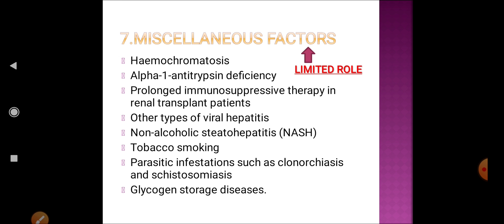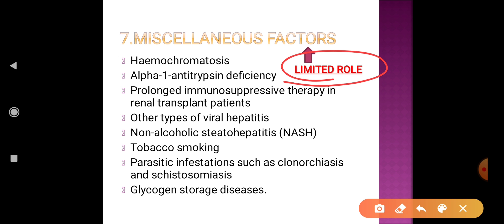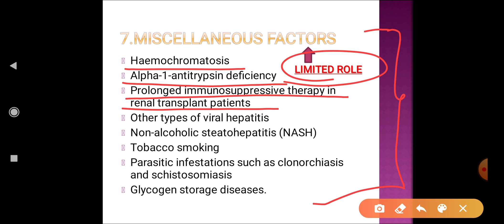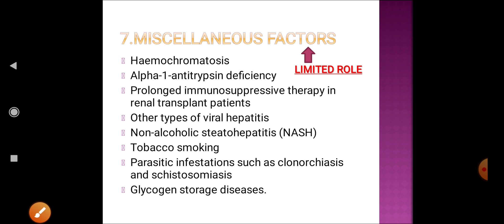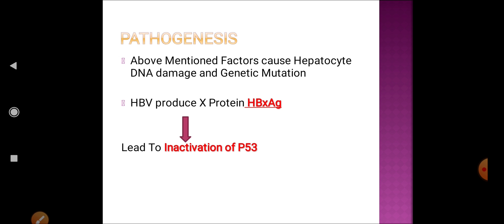These six are the main proven factors for hepatocellular carcinoma. The seventh category includes miscellaneous factors with a limited role in HCC development: hemochromatosis, alpha-1 antitrypsin deficiency, prolonged immunosuppressive therapy after renal transplantation, other viral hepatitis such as hepatitis D, non-alcoholic steatohepatitis, tobacco smoking, parasites like Clonorchis sinensis and Schistosoma, and glycogen storage disease.